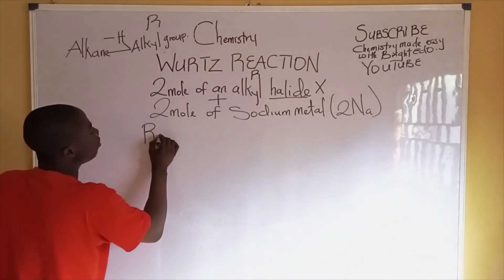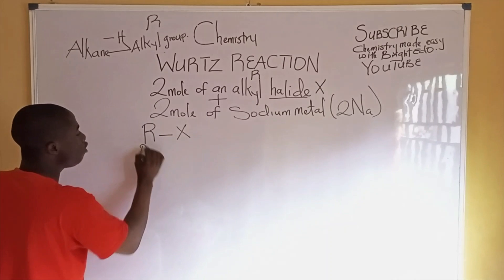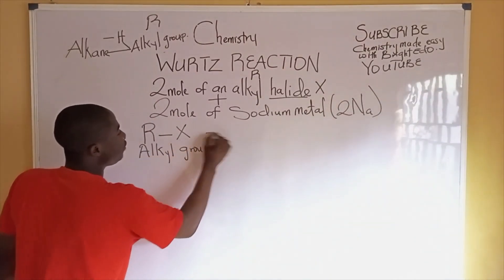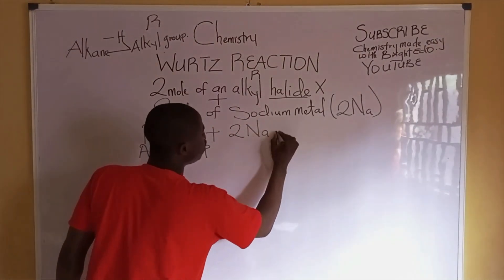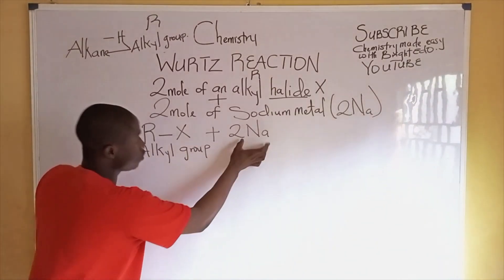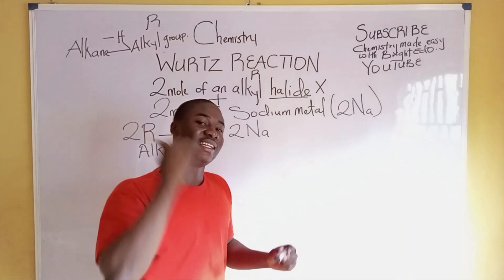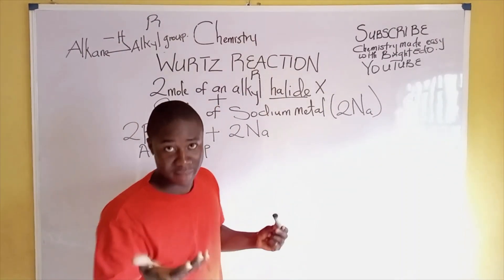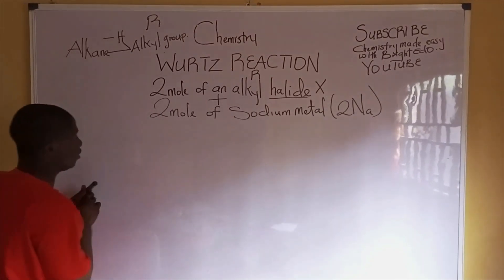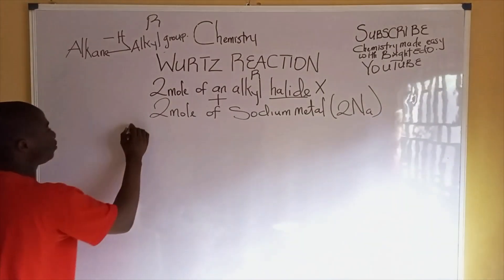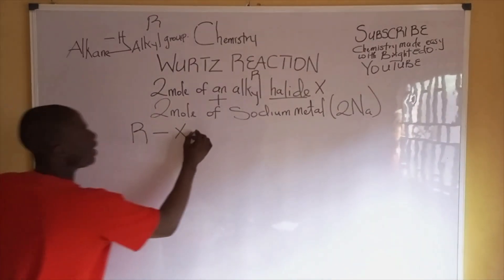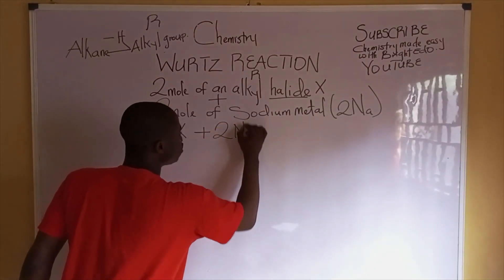So basically R bonded to X forms the alkyl halide. Two moles of the alkyl group reacting with two moles of sodium metal gives us an alkane. The reaction mechanism shows two moles of an alkyl group — R-X — reacting with two moles of sodium metal.